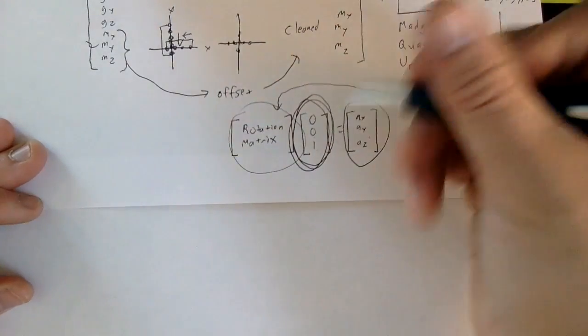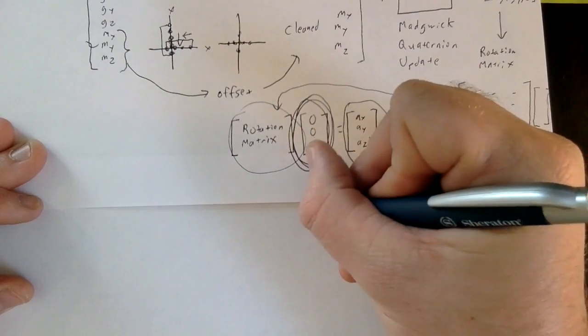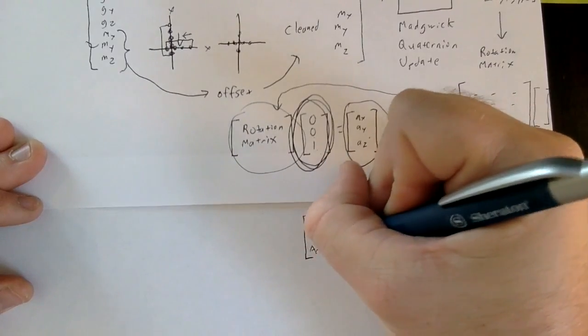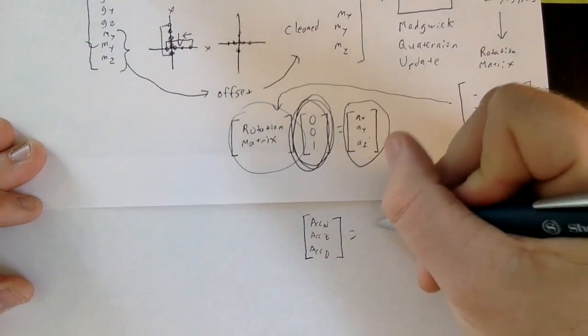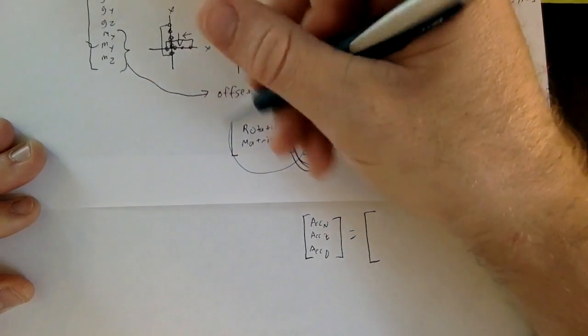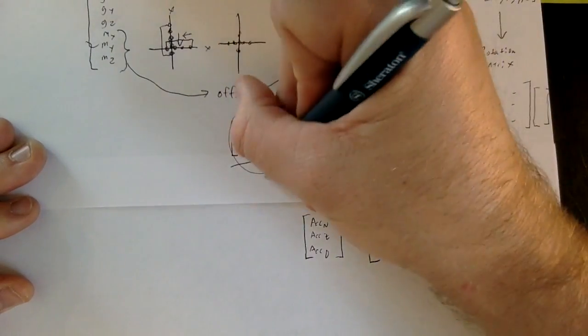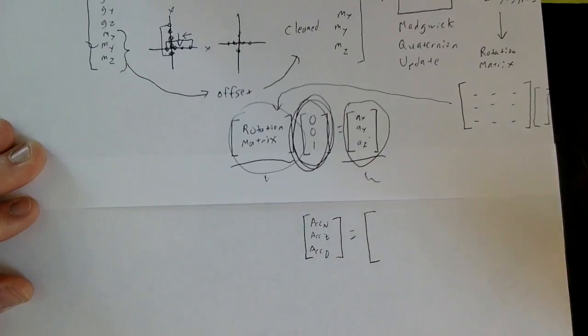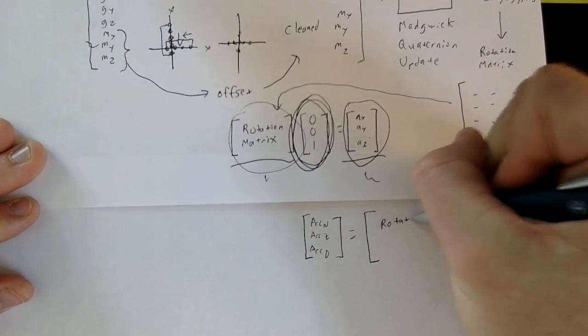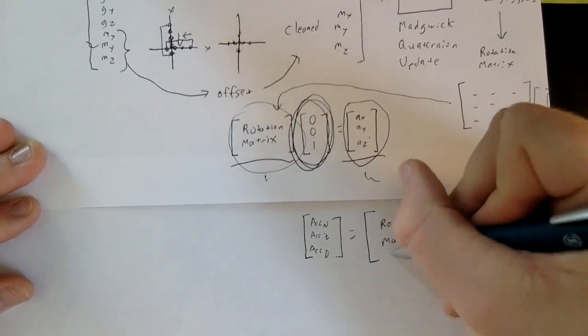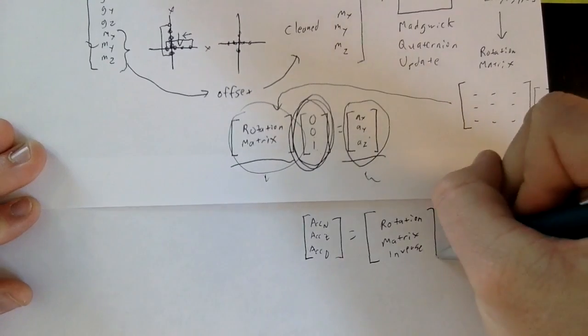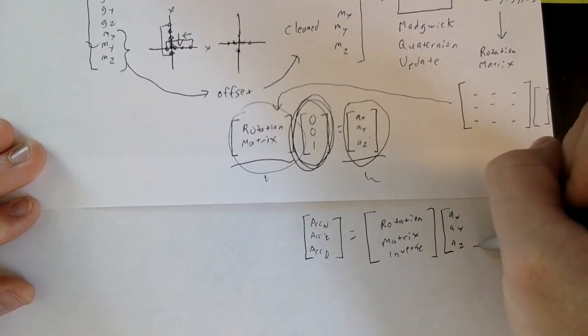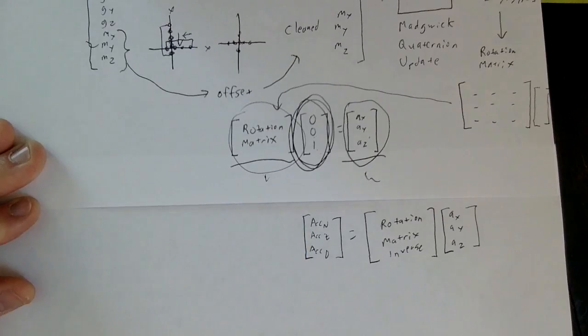So what I can instead say in this equation is that acceleration north, acceleration east, acceleration down equals, now with normal arithmetic here, you would just divide right here, divide by this, and then put it over here. But these are matrices, so you can't actually divide, so it's just an inverse matrix. So if I say this is rotation matrix inverse multiplied by my acceleration vector, then I should be able to solve for all of these values.